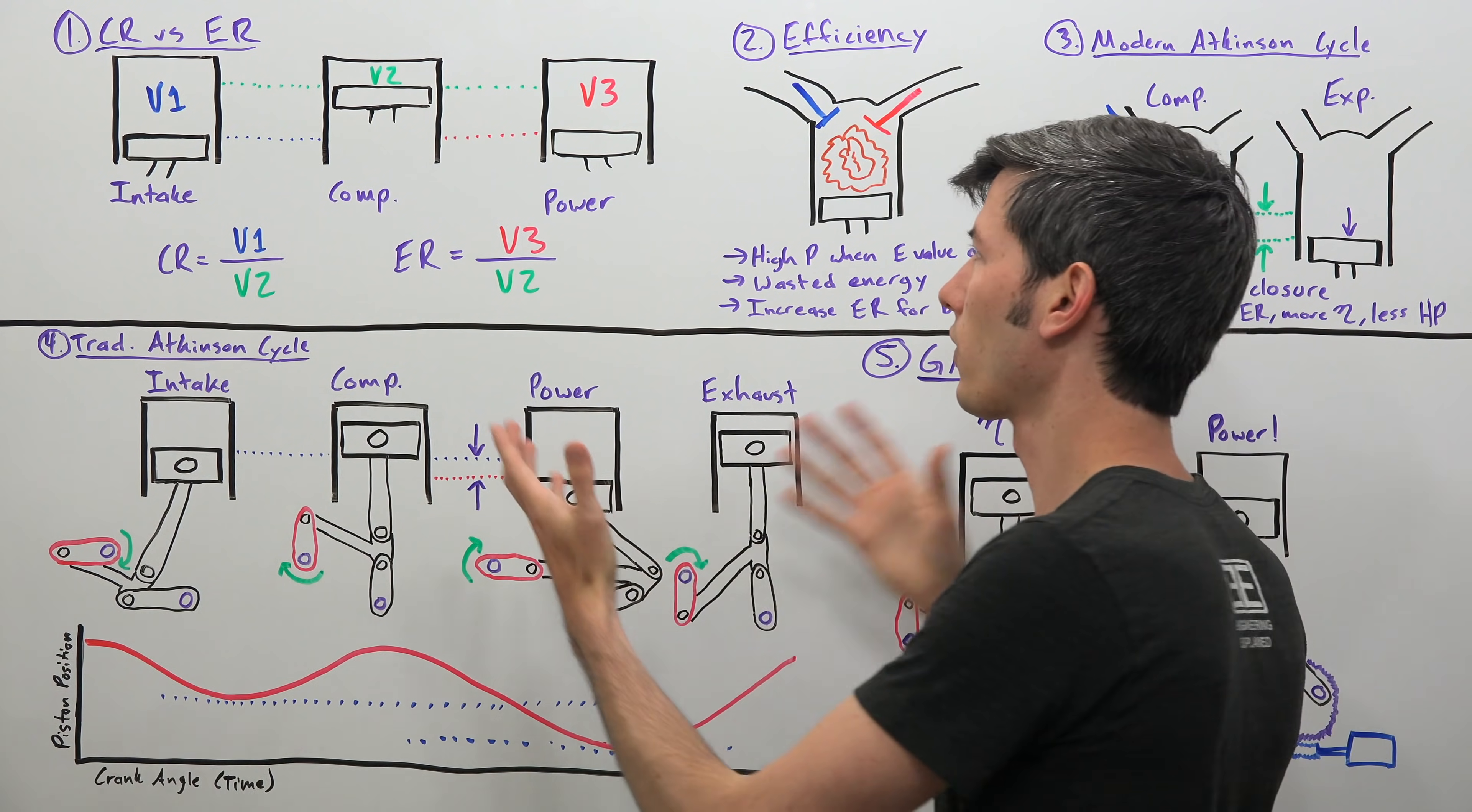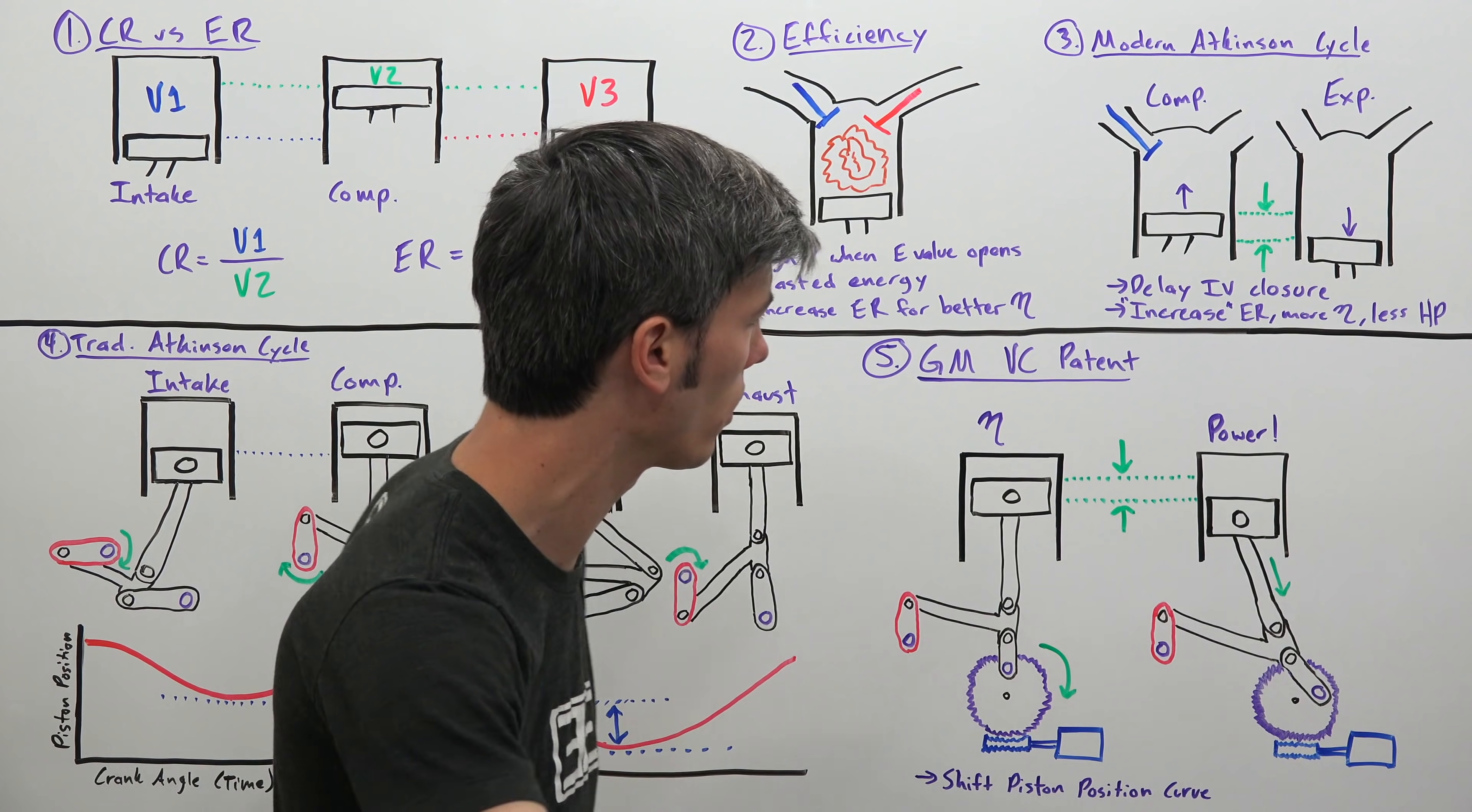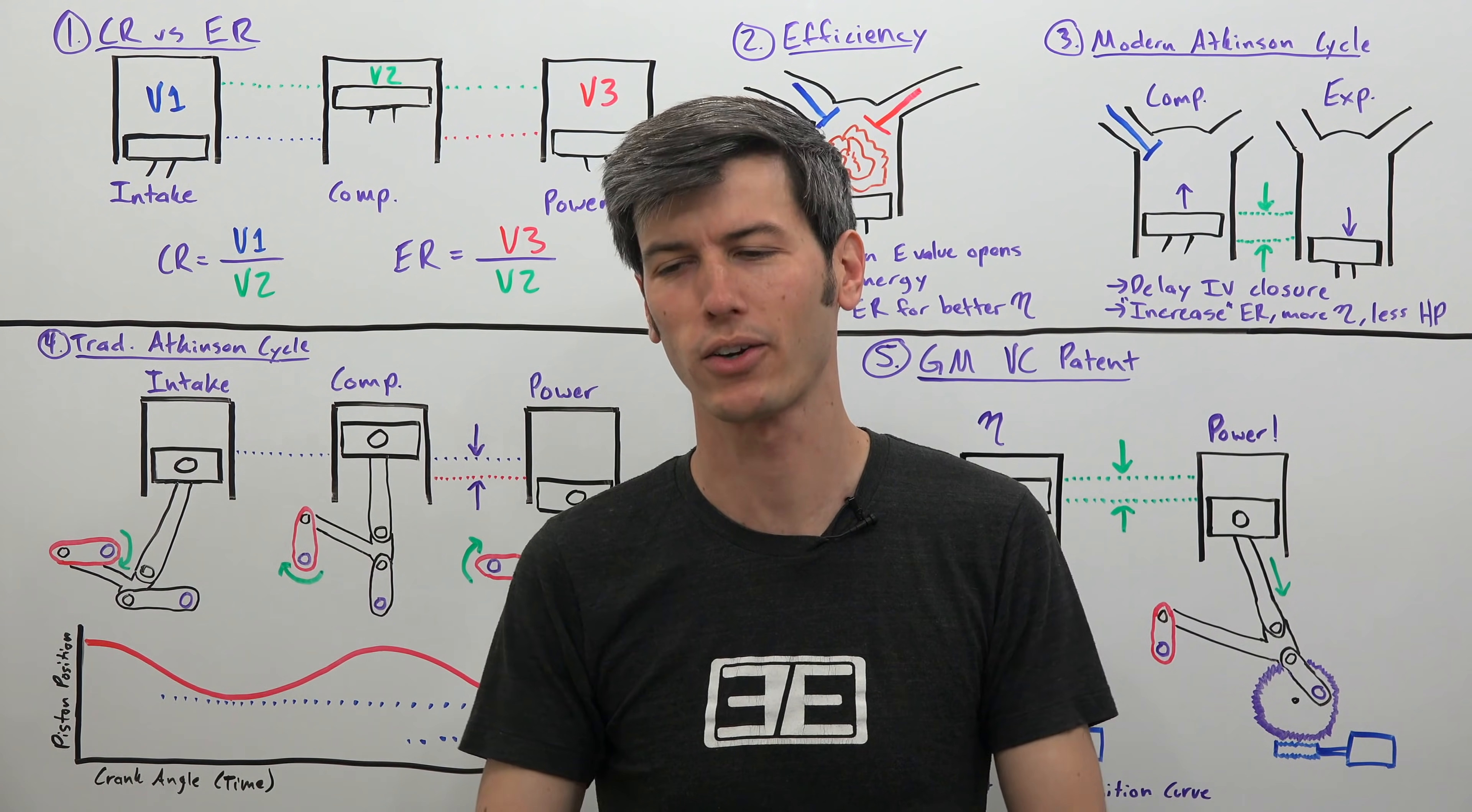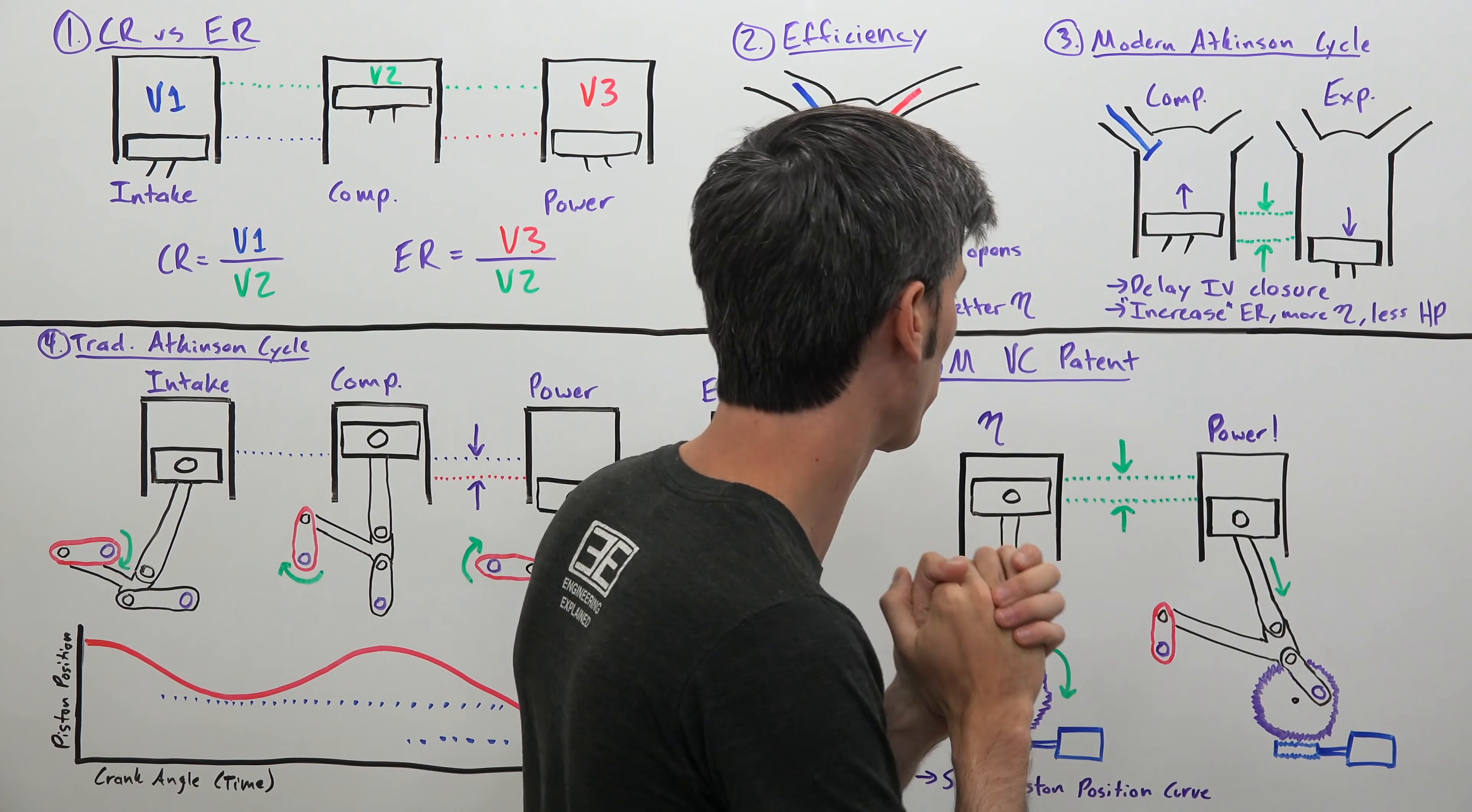Now this all probably looks like a big mess of information, but I promise we have a nice logical flow here, and we will eventually understand how this engine works by the end of the video. The big idea here, GM doesn't want to compromise between power and efficiency. They want both, just like every other car maker out there. They don't want to sacrifice one or the other, and so this is one solution which GM has come up with.